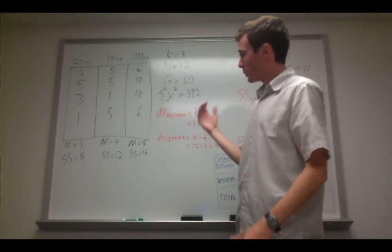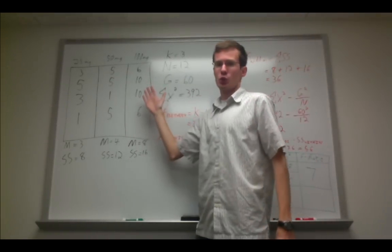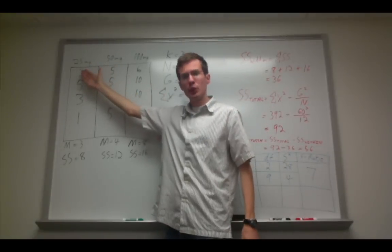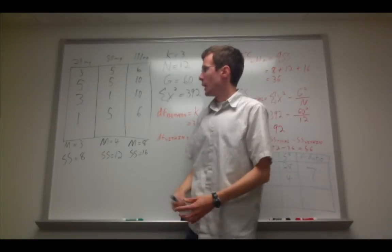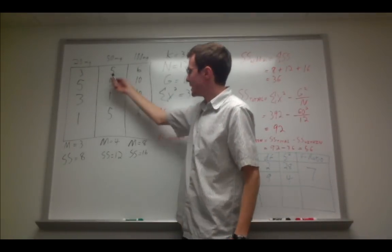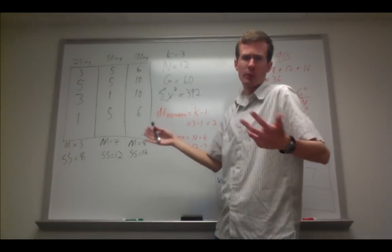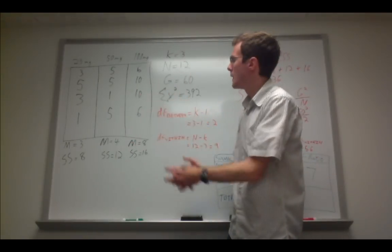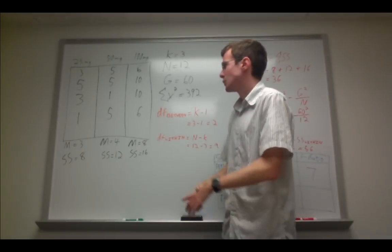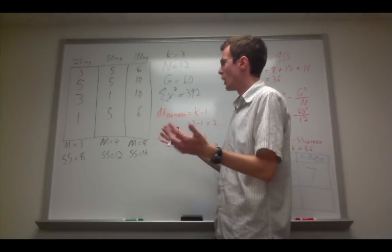In this example, let's say that we have three different dosages of a drug: 25 milligrams, 50 milligrams, and 100 milligrams. We have four observations in each of these columns. These numbers are somewhat arbitrary. Think of them as numbers representing health, let's say.